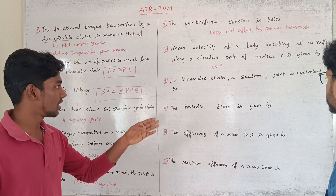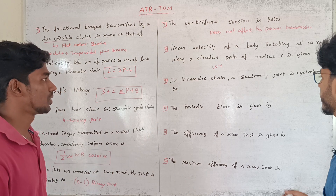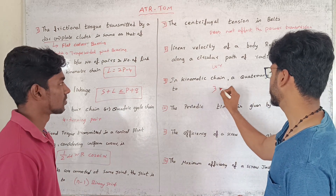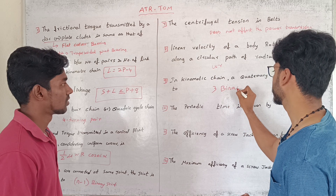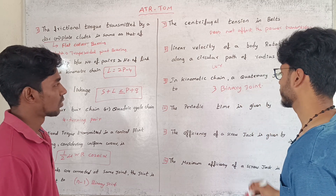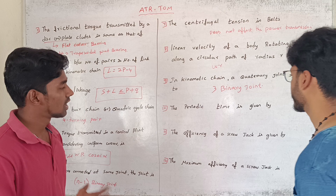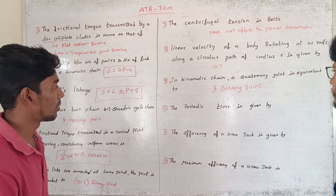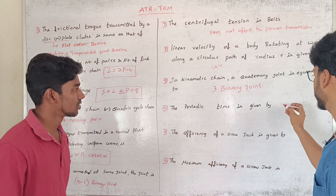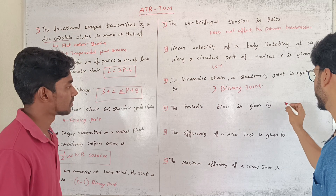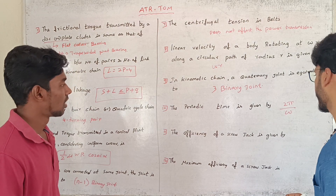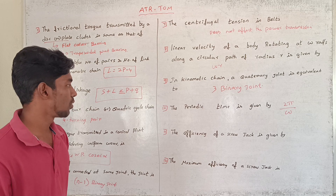In a kinematic chain, the quaternary joint is equal to three binary joints. The periodic time for simple harmonic motion is given by T equals 2π divided by omega.